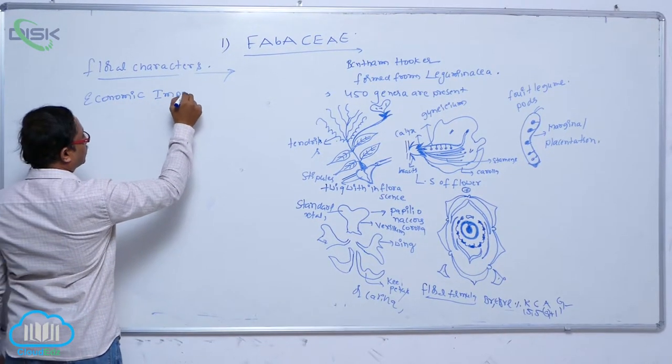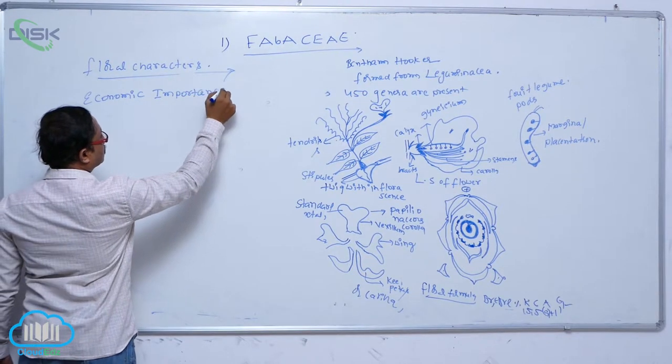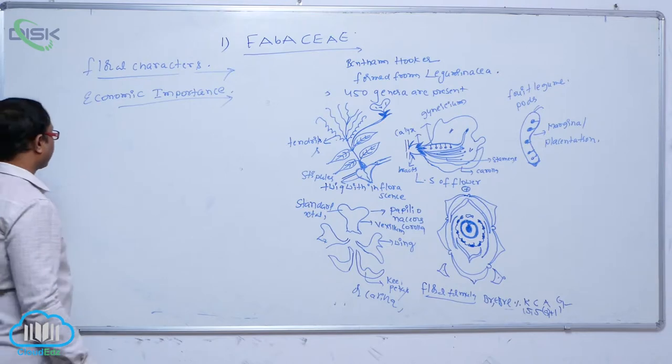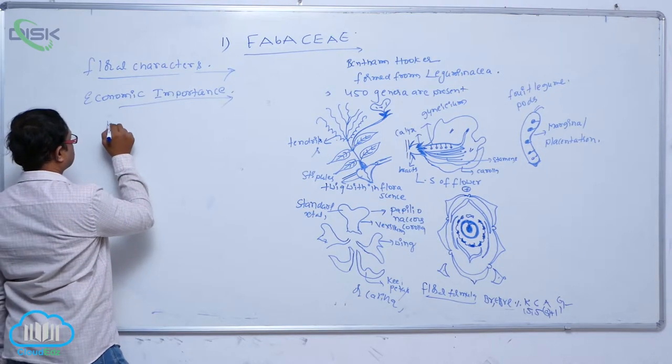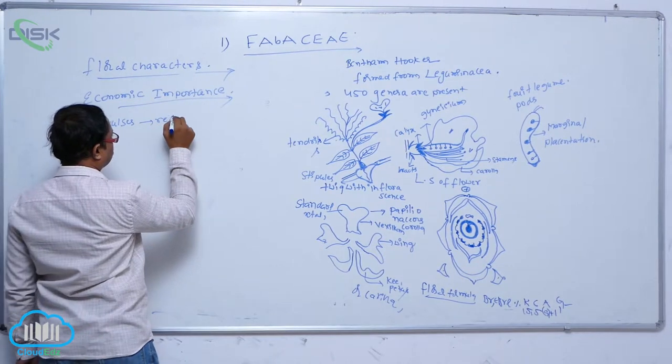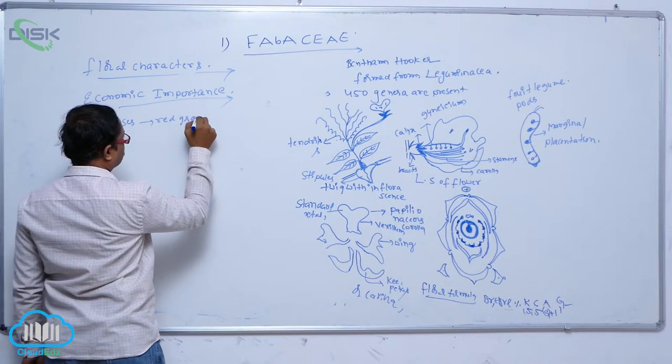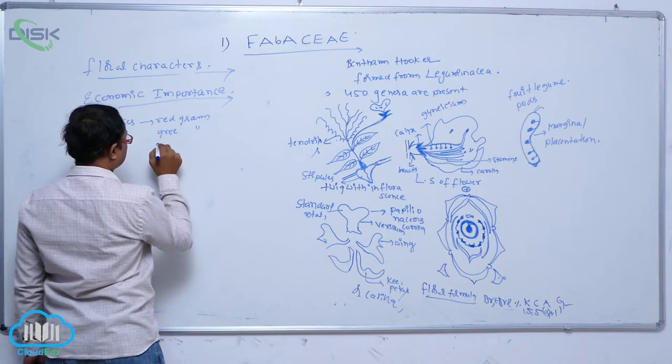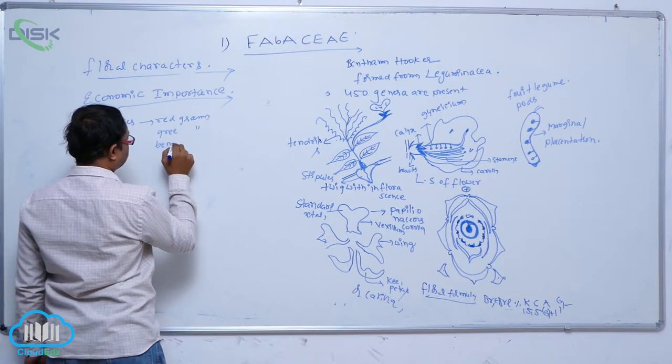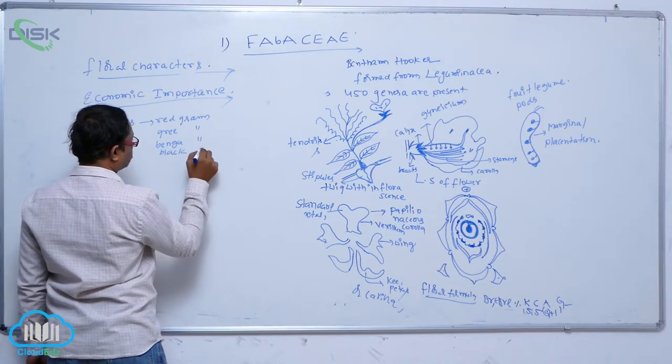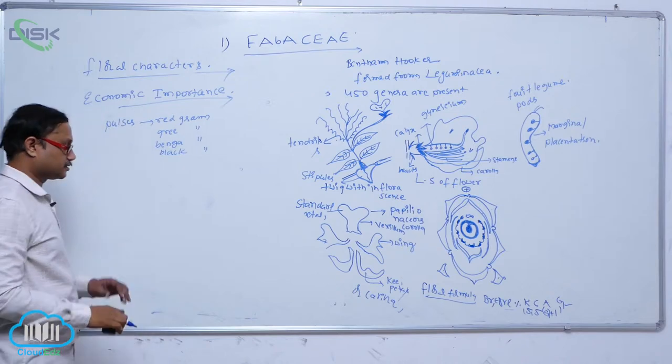Economic importance of family. Generally, pulses - what are the red gram, green gram, bengal gram, black gram? These all are the pulses.